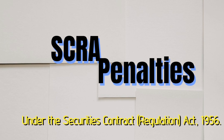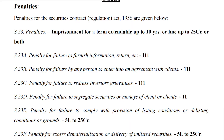Today we will be studying about the penalties under the Securities Contracts Regulation Act, 1956. The first penalty is provided under Section 23, which is imprisonment for a term extendable up to 10 years, or fine up to 25 crore rupees, or both.